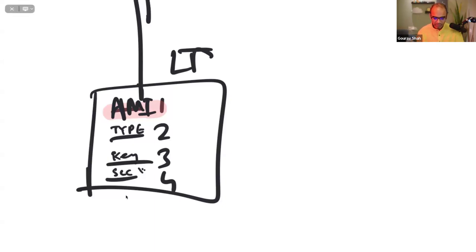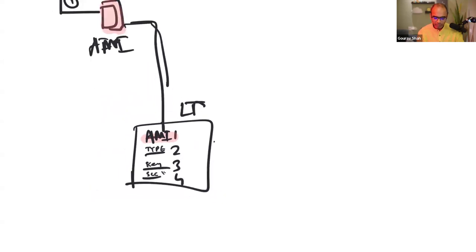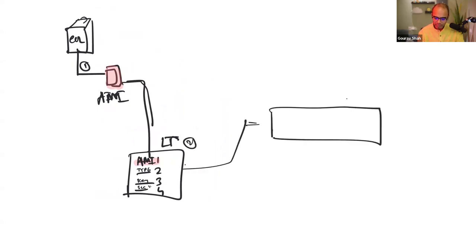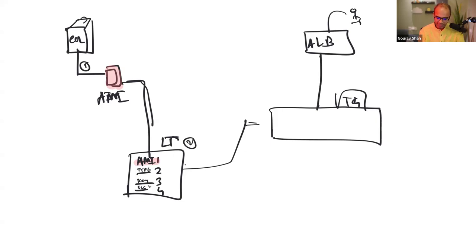Step three is where you define something called a target group, which is then associated with a load balancer. The load balancer is what your users will hit, and it connects to the target group. A target group is a set of instances that you run. Target groups are responsible for health checks, keeping the instances healthy, and you connect them to the load balancer, which sends traffic to them.